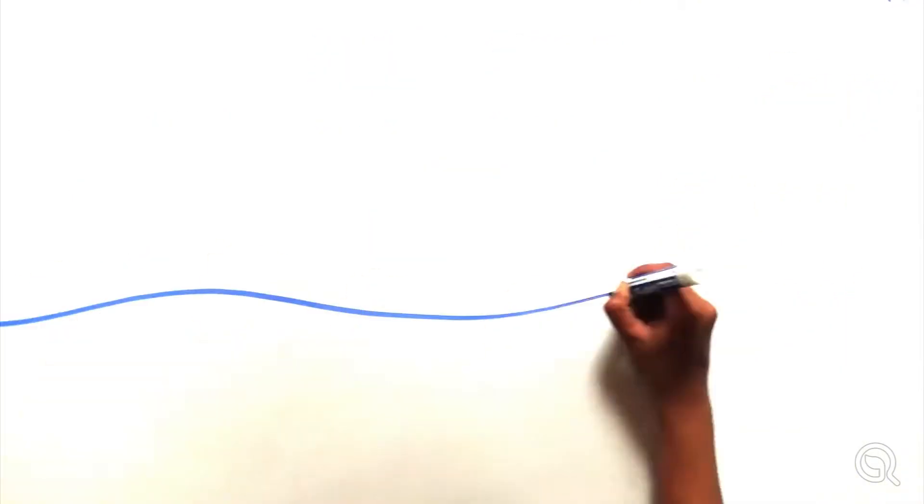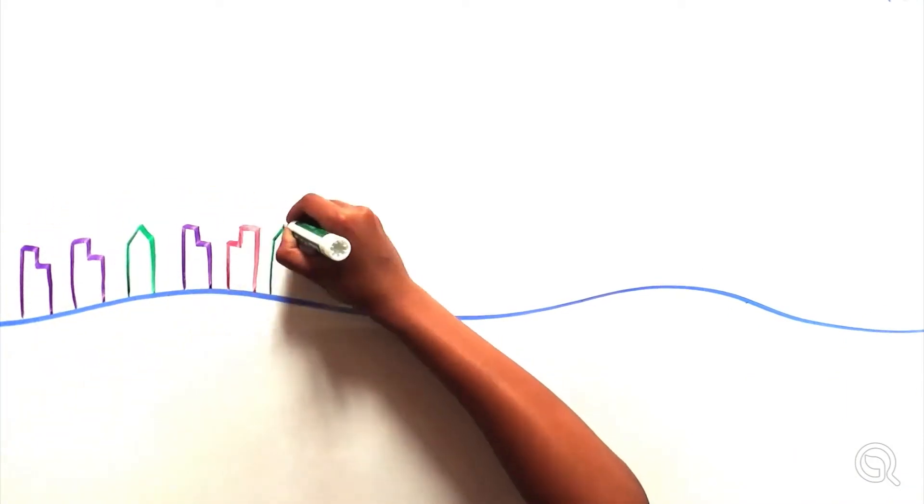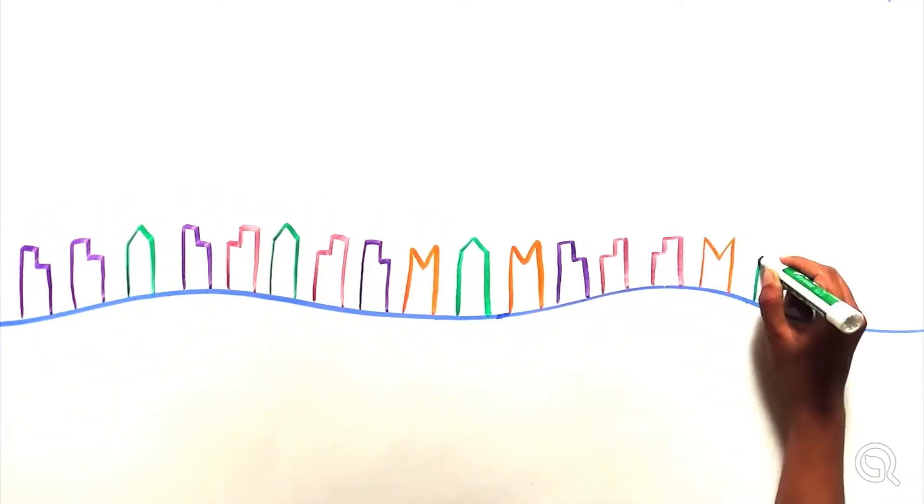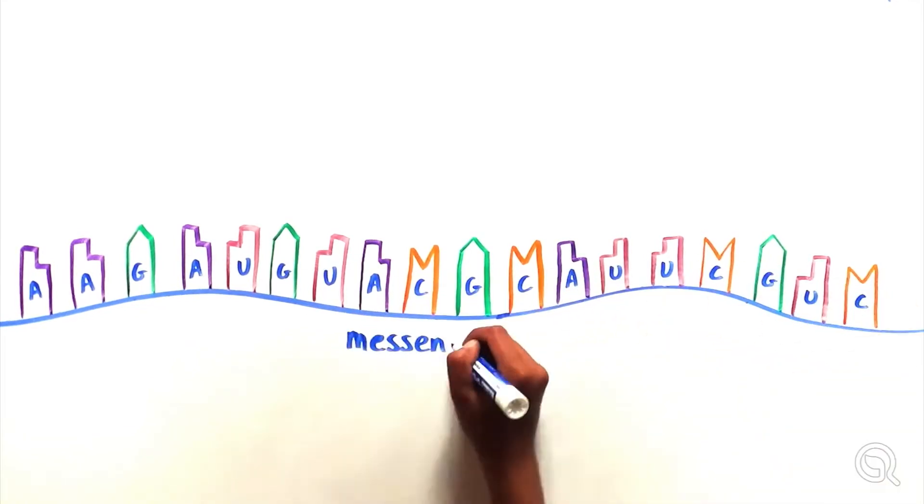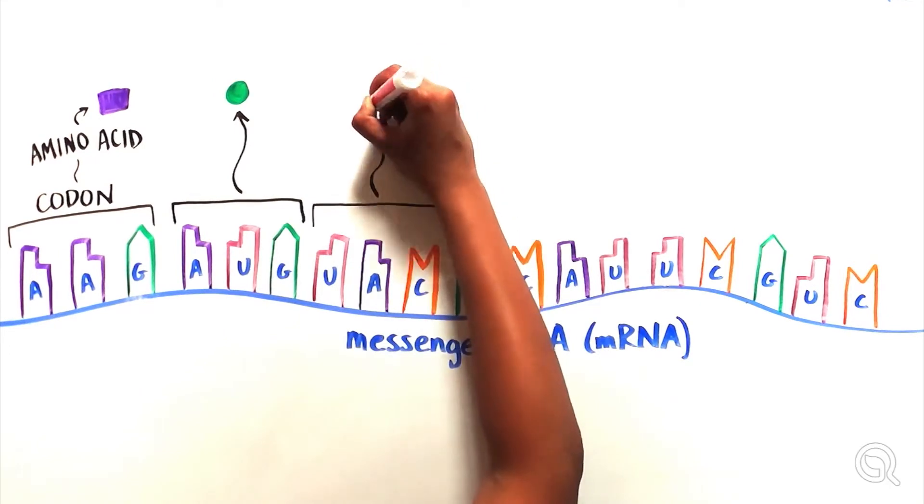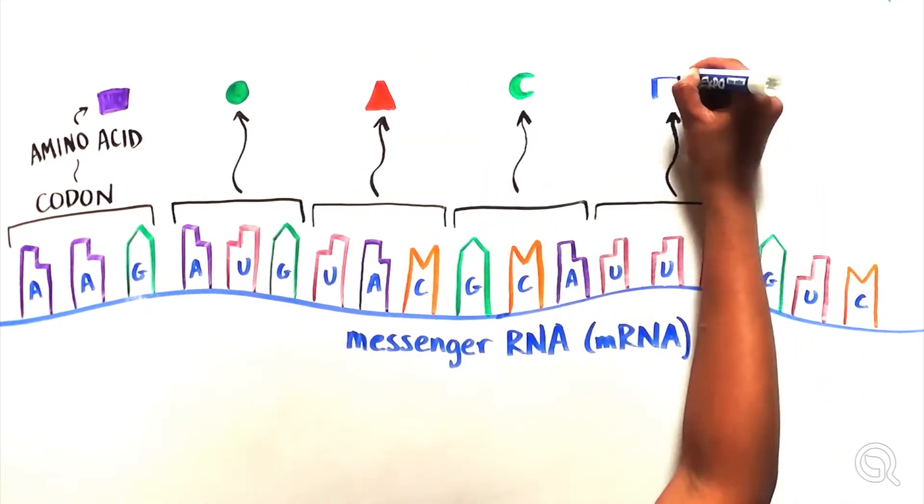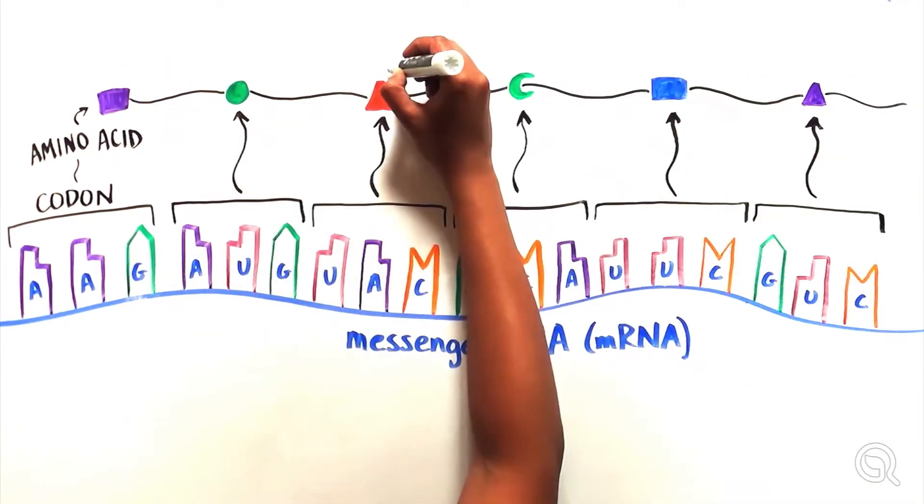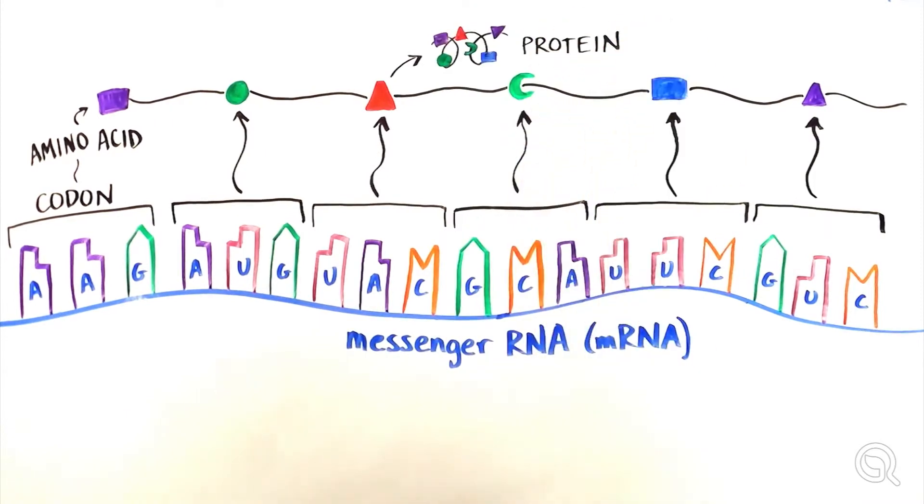A specific type of RNA, called messenger RNA or mRNA, is responsible for providing instructions to make proteins. A group of three RNA bases, known as a codon, encode for specific amino acids. And multiple amino acids strung together make a protein.